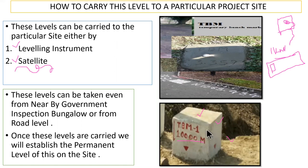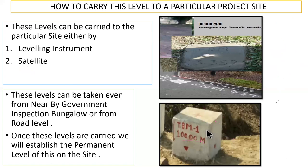So these are the ways that you can establish the benchmark. A good surveyor will try to do all these things, but as fresh engineers we should at least have a basic idea how these things are brought. These levels can be taken even from the nearby government inspection bungalow or from the road level. Those are the permanent benchmarks we get in the railway stations. Each district or each taluk will be having a government inspection bungalow — even there, the RL will be written. Also the road level — the top level of the road — will have a certain RL.